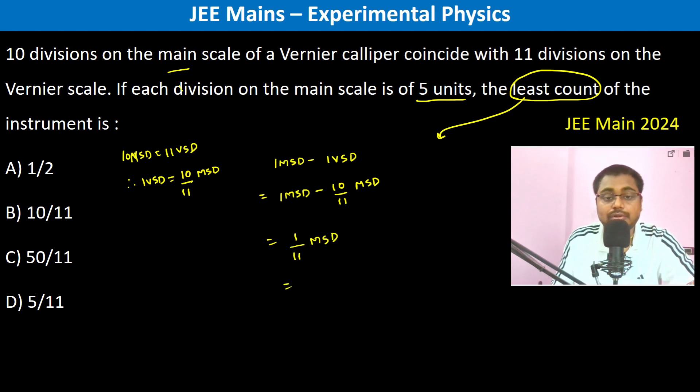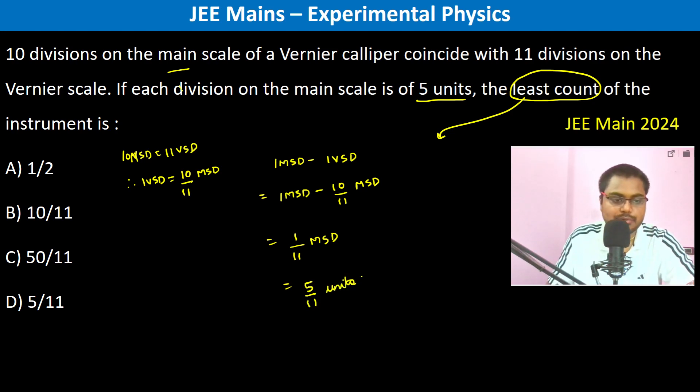Since 1 main scale division is 5 units, the least count becomes 5/11 units. So the answer is D.